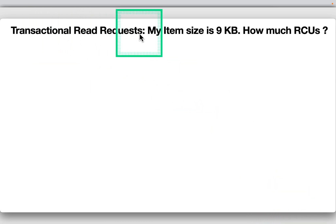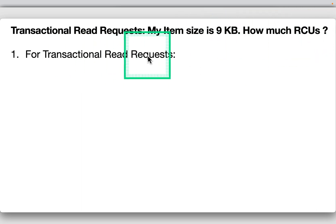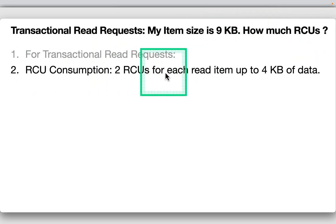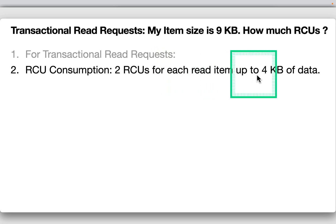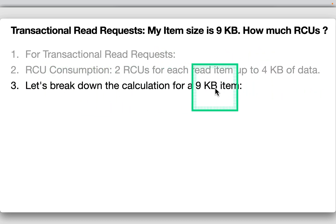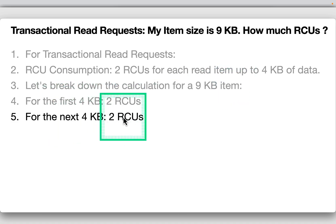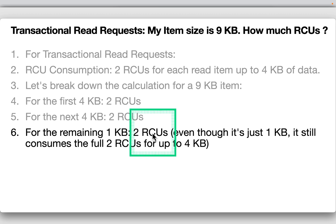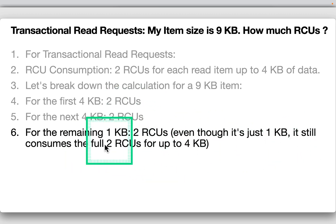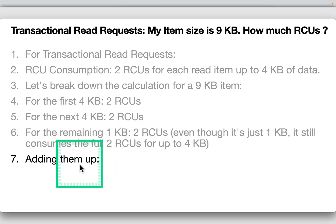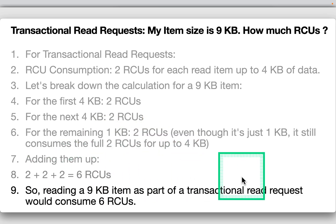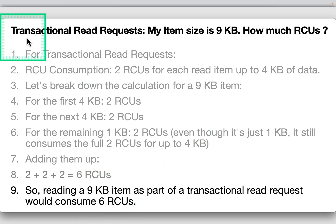For a transactional read request, the rule is two RCUs per read item per 4KB of data. For a 9KB item: first 4KB = two RCUs, next 4KB = two RCUs, remaining 1KB = two RCUs (still consumes the full allotment). Total: six RCUs for a transactional read of a 9KB item.